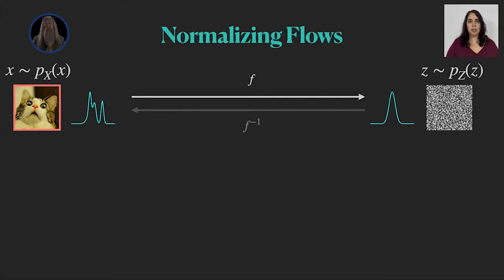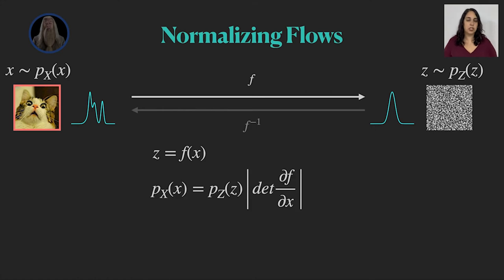And we can use the mapping between x and z to write the probability of x that is hard to compute as a function of the probability of z, which is easier to compute. If we follow the change of variable rule, we get this expression that has two parts. The first is the probability of z, which is our simpler distribution.